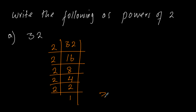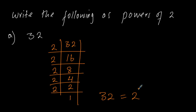So 32 as a power of 2 — it will be 2 to the power of the number of times we divided: 1, 2, 3, 4, 5. So 2 to the power of 5, that is 32.